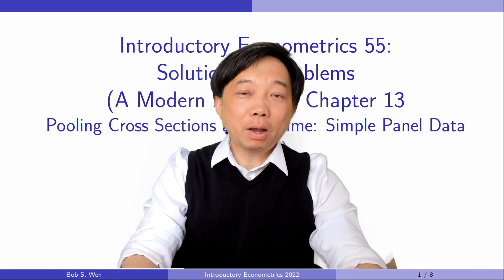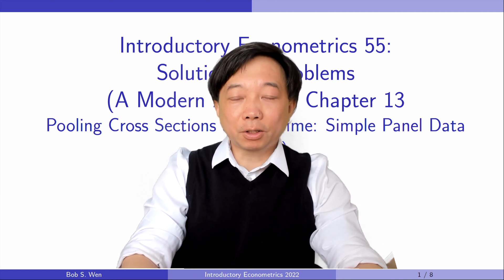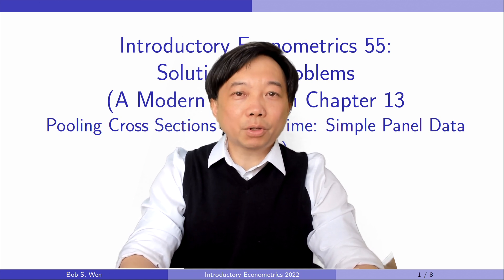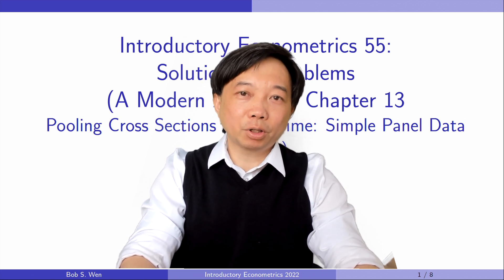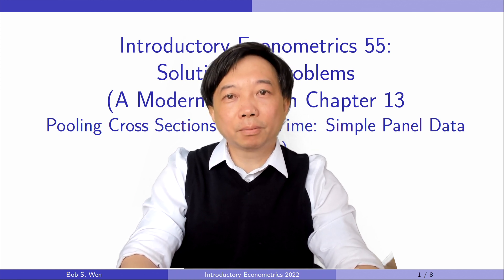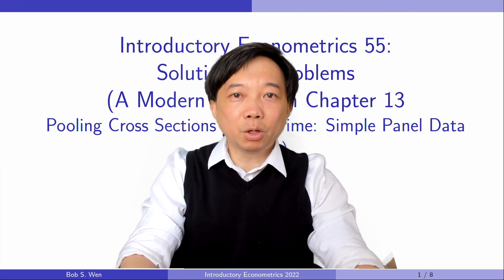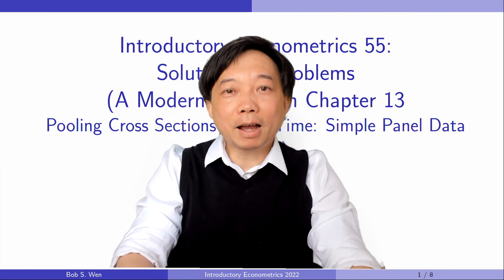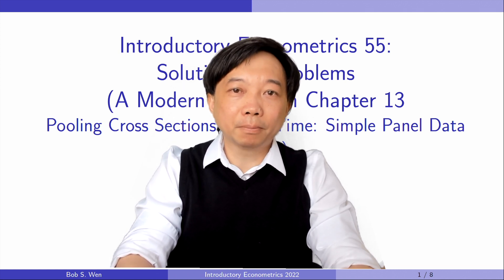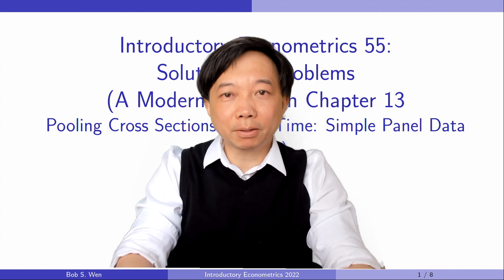Hi, I'm Bob. Welcome to the introductory econometrics course. Today, I will continue to solve the problems for introductory econometrics or modern approach, the seventh edition by Professor Jeffrey Wooldridge. Let's find answers for chapter 13, pooling cross-sections across time, simple panel data methods.